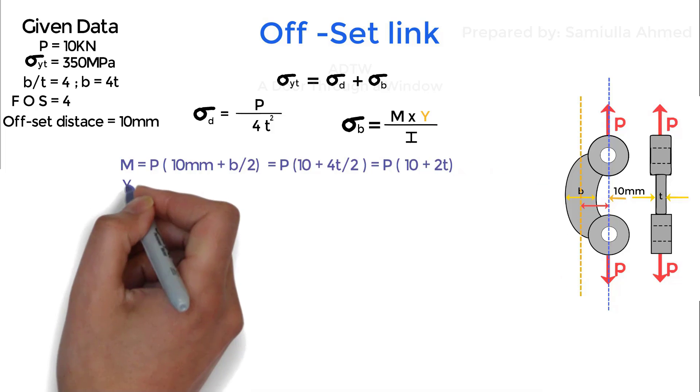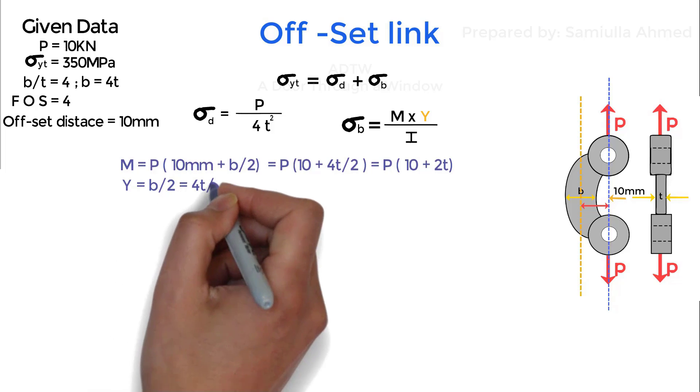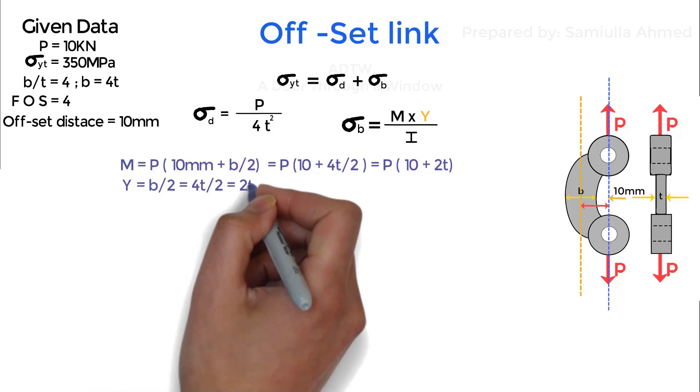Y is equal to width by 2. And if we put value of width as 4 times t and simplify we have y is equal to 2t.